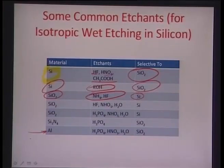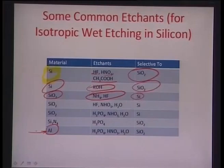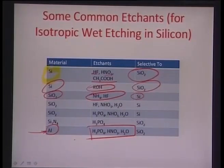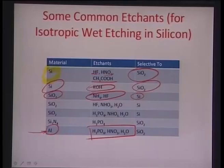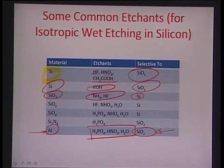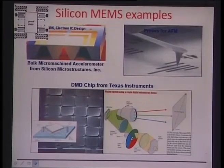There are also etchants used for metals on silicon or other substrates. Metals are used to develop interconnects between different parts of the circuitry on a wafer. For aluminum, a combination of phosphoric acid (H3PO4), HNO3, and water acts as a very good etchant selective to SiO2 - the moment it encounters SiO2, the etch automatically stops. This makes SiO2 a very good sacrificial masking layer when you want to selectively etch deposited aluminum. These are basic processes that will be covered in more detail in later lectures.